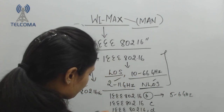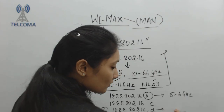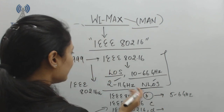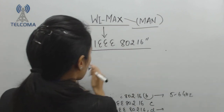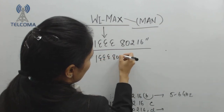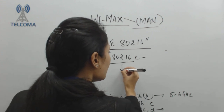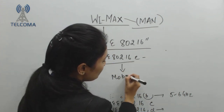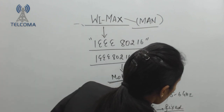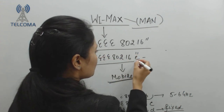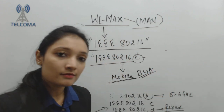IEEE 802.16d is for fixed wireless access systems with an operating range of 2 to 11 GHz. The evolved standard IEEE 802.16e has the same operating range of 2 to 11 GHz, but it is designed for mobile systems. IEEE 802.16d is for fixed wireless access and IEEE 802.16e is for mobile broadband wireless access.